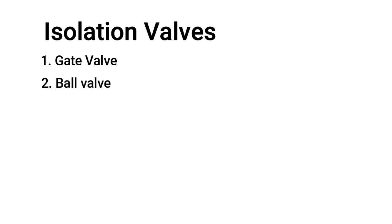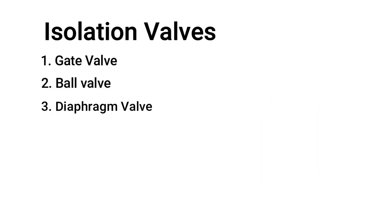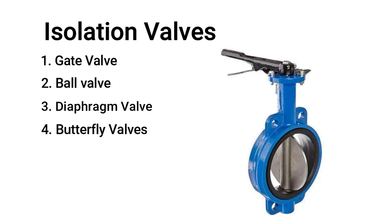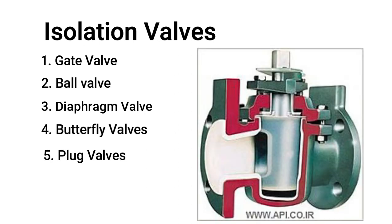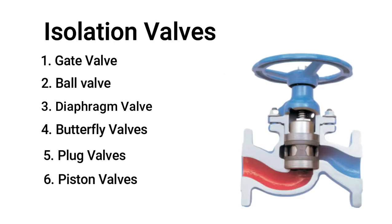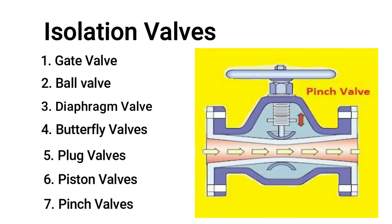The second valve is the ball valve, which is easy to operate. Third is the diaphragm valve — in the image we can see how the diaphragm is operated to isolate the flow. Fourth is the butterfly valve. Fifth is the plug valve, which has a groove to allow flow. Sixth is the piston valve, where the downward motion of the piston isolates the fluid flow. And the last one is the pinch valve, as shown in the figure.